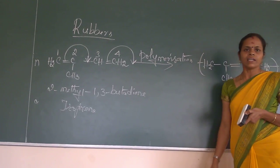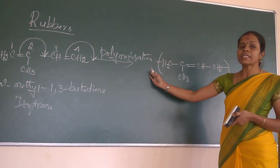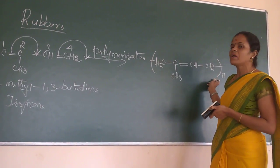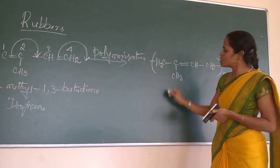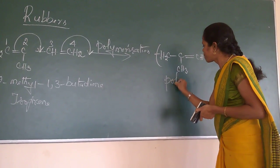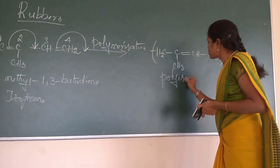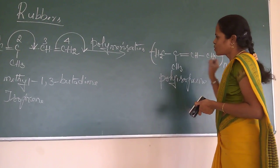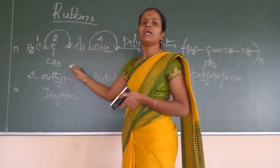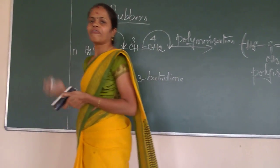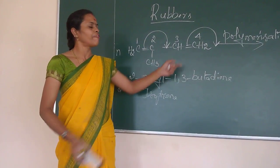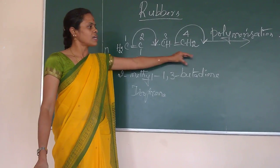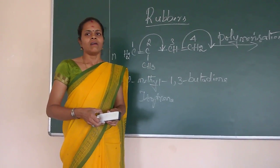As you discussed earlier, if the product is polymer means, we should mention the N here. So this is polyisoprene. So we prepared the natural rubber. That is we prepared the rubber from the nature. So this is called as polyisoprene.